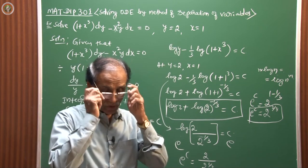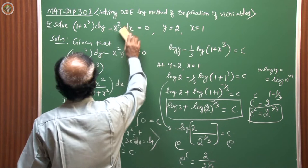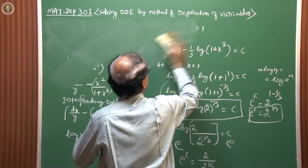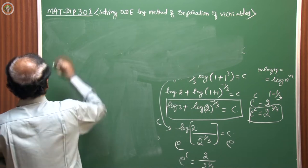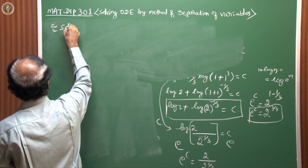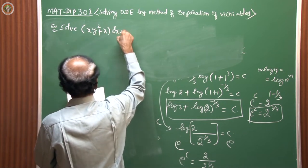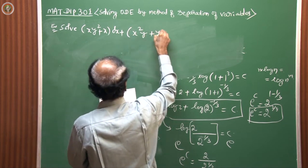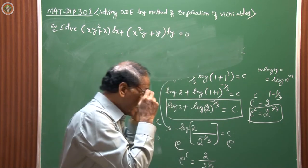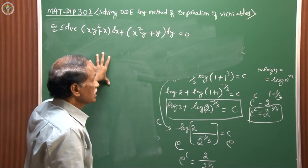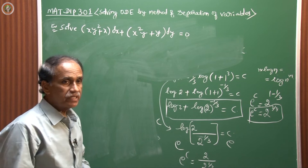We now move on to another type of problem — the second variety. Solve: x(y² + 1)dx + (x²y + y)dy = 0. This problem has no initial condition, so the solution will be in terms of an arbitrary constant.